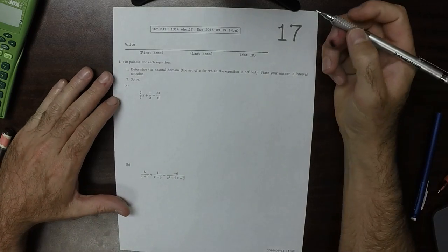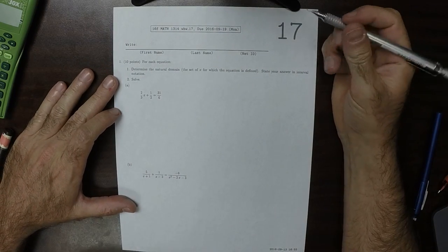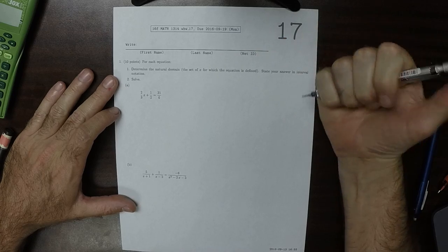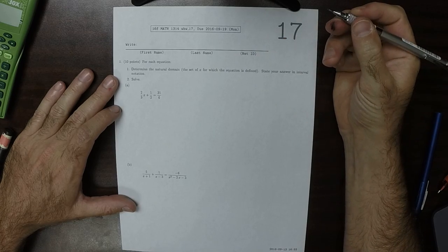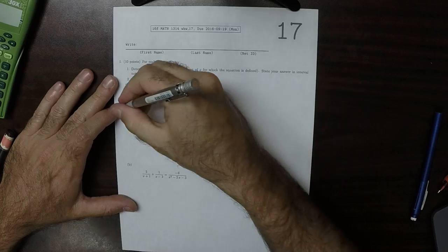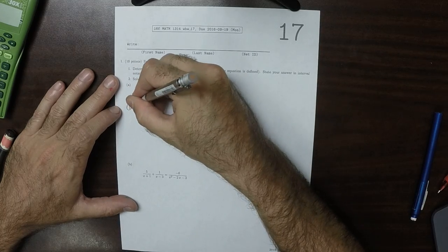This is the solution to written homework 17. So it says, determine the natural domain, and also solve. Okay, so then, the natural domain.